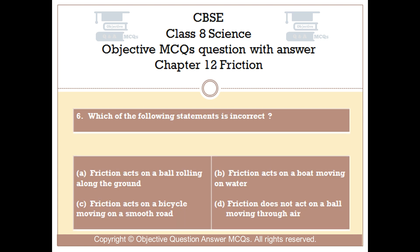Question number 6. Which of the following statements is incorrect? Option A: Friction acts on a ball rolling along the ground. Option B: Friction acts on a boat moving on water. Option C: Friction acts on a bicycle moving on a smooth road. Option D: Friction does not act on a ball moving through air.